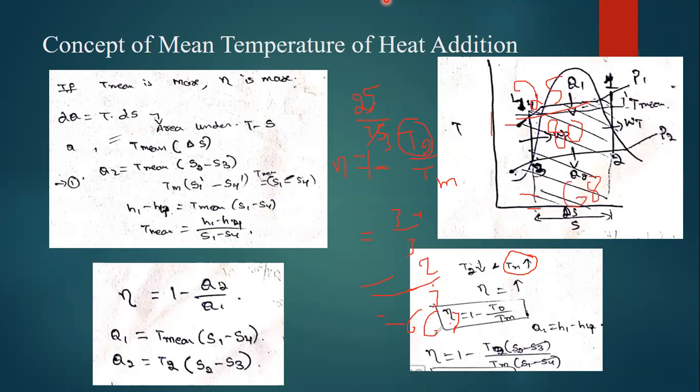Which one is higher, either 66 or 68? 68. So that proves that if T mean temperature is going to be high, then this efficiency is going to be high. In that way we can justify that if T mean is going to be high, then this efficiency is going to be high.